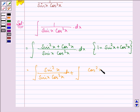Cos square x divided by sin x cos cube x into dx. In simplifying we have the answer as